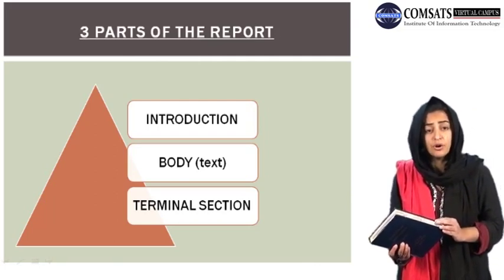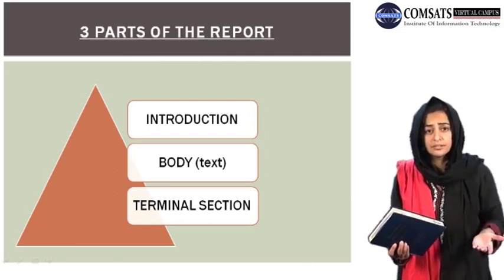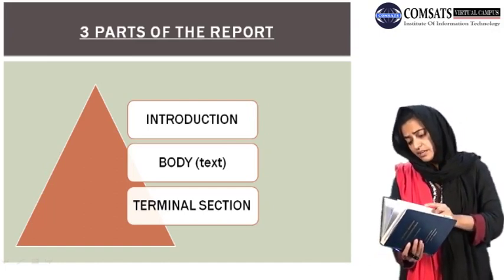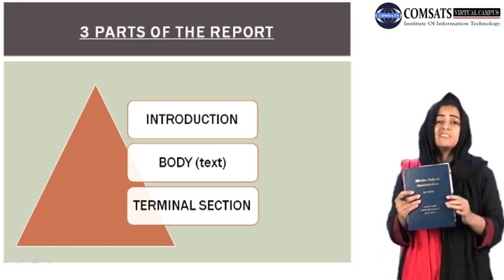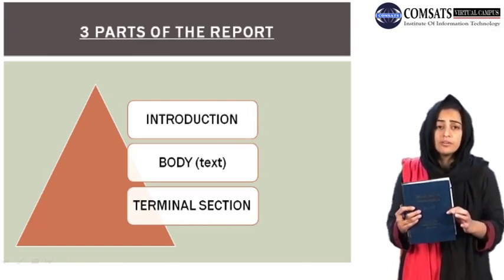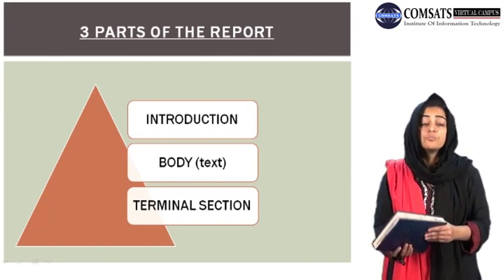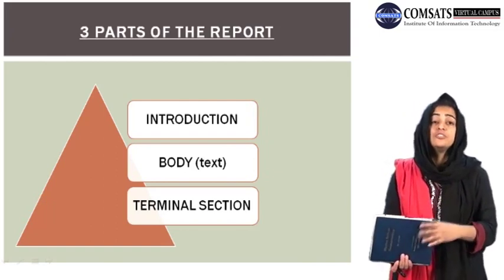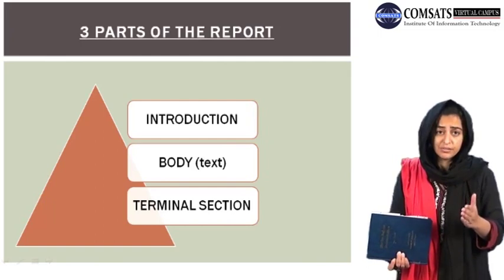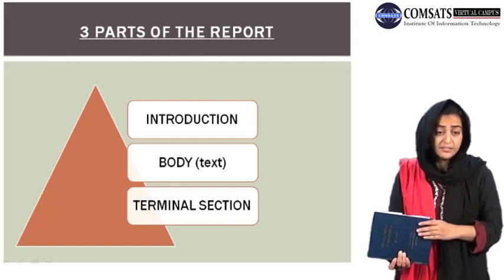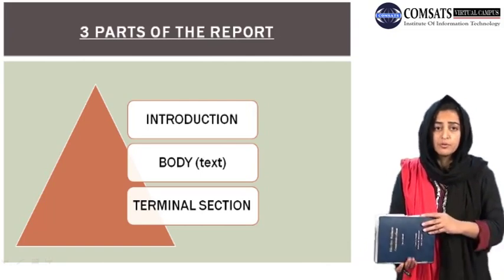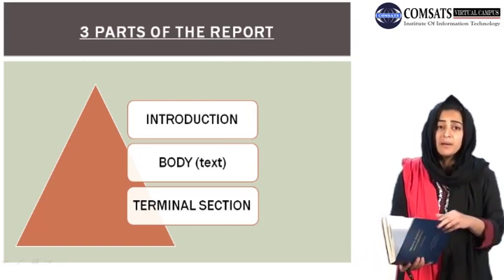Long reports can have a length of up to 1000 pages. This book is about 600 pages and is an example of a formal report. One difference between formal and informal reports is the length, and the other difference is that there are some additional parts in formal reports — supplemental parts such as a preface, appendix, cover fly, title fly, and cover page.